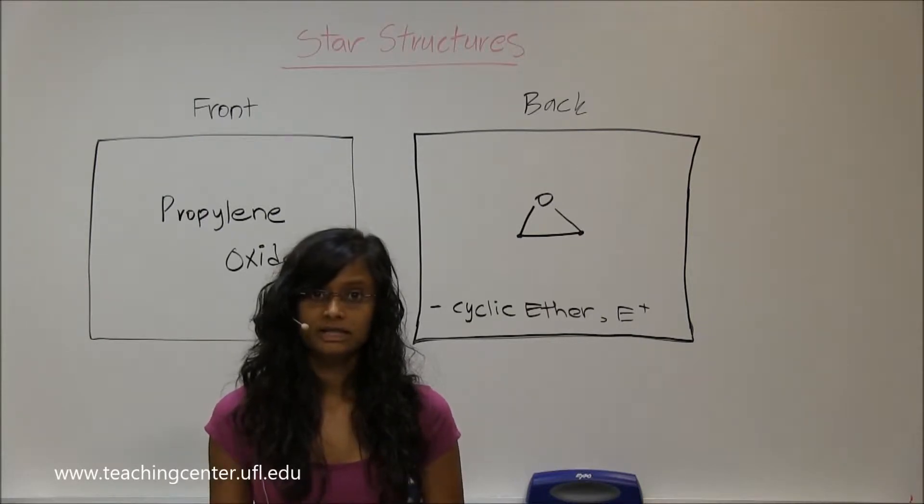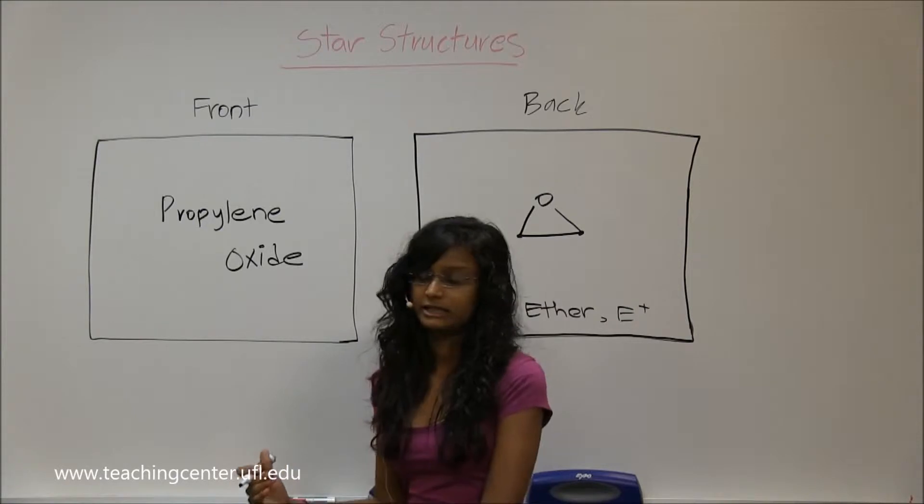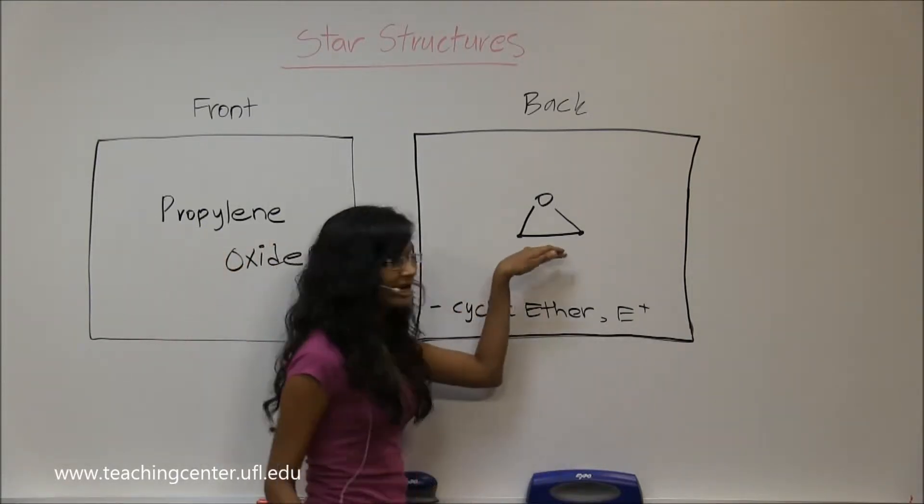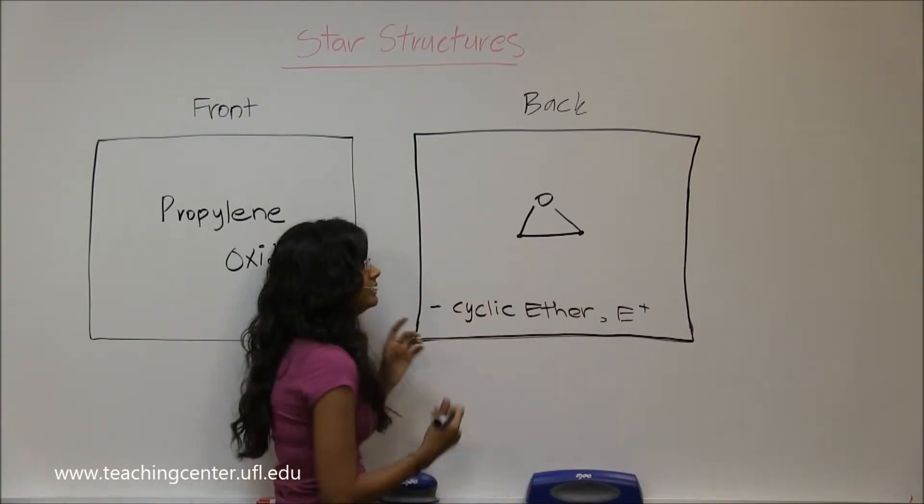Propylene oxide is the next molecule. The last one we did was ethylene oxide where you had two carbons. Now you have three carbons, so you'll still have the ring because ethylene oxide was your smallest oxirane.